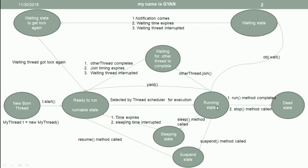If a thread is in the running state and the suspend method is called, then the thread will go to the suspended state. If the thread is in the suspended state and the resume method is called on that thread, then the thread will again go to the ready to run state.